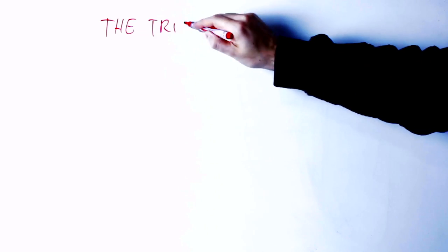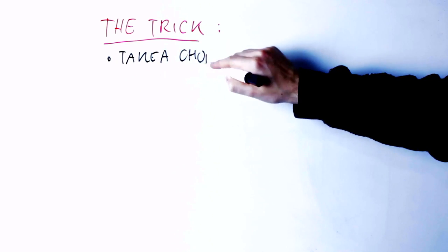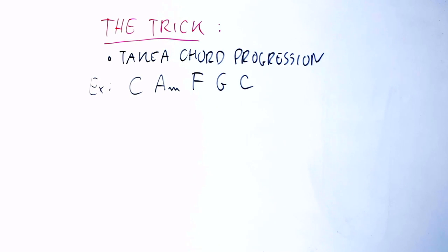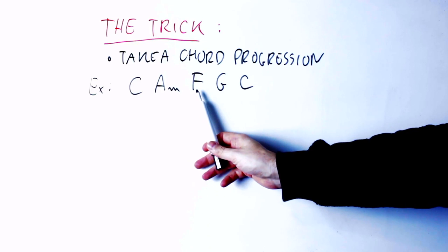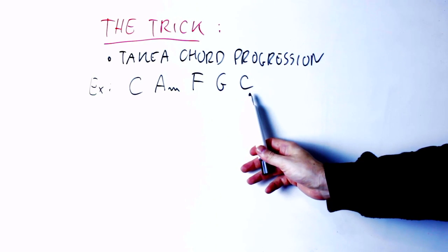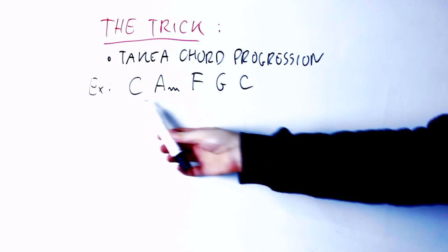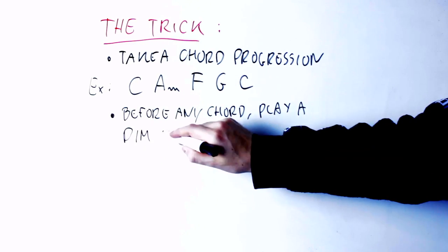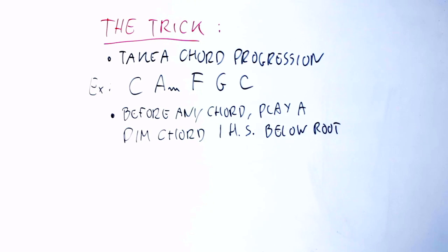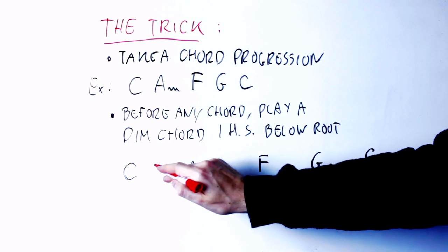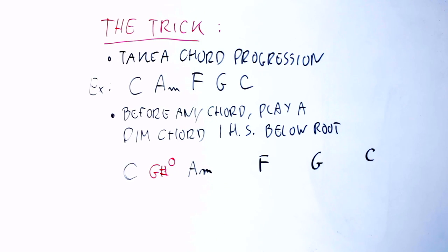Now that we have the basics down, here is the trick. We're going to take a super simple chord progression — C, A minor, F, G, C — to show that this trick works regardless of how simple the chord progression is. Before any chord in this progression, you can play a diminished chord with the root one half-step below the root of that chord. For instance, after the C chord and before the A minor chord, I'm going to play a G sharp diminished seventh — since G sharp is a half-step below A.